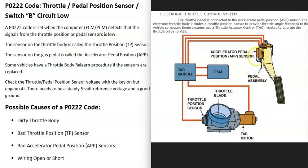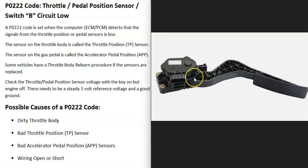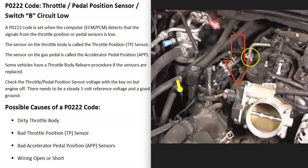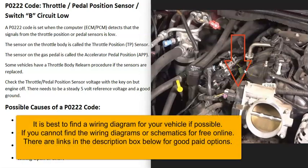The next possible cause is a bad sensor — either a bad accelerator pedal position sensor or a bad throttle position sensor. There's a sensor located down on the gas pedal, and if that goes bad it's going to cause problems. There's also a throttle position sensor up at the throttle body, and if it goes bad that will cause problems too. I've made videos on how to test these sensors — I'll put a link down below.